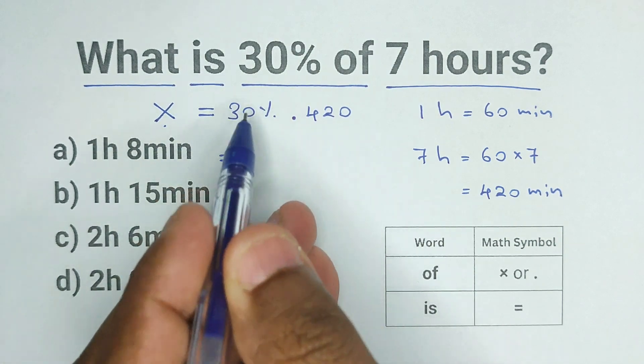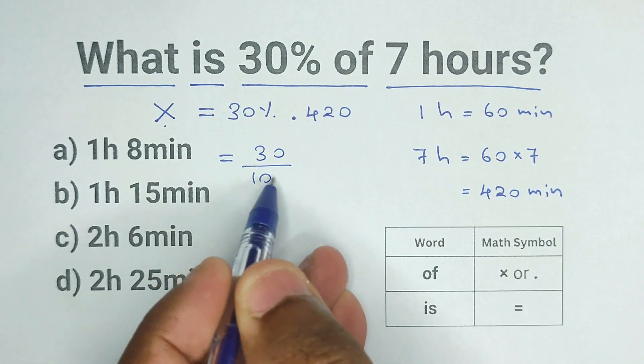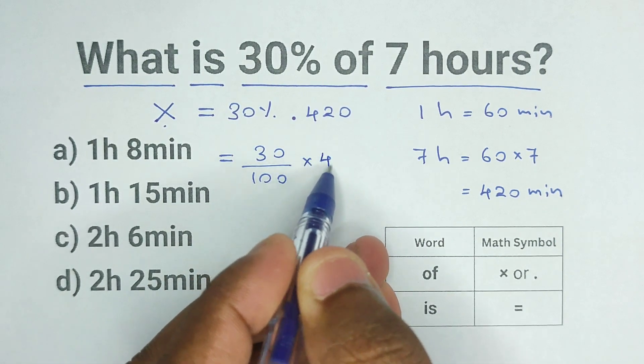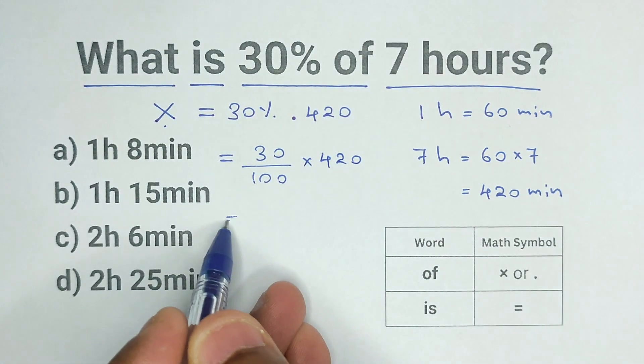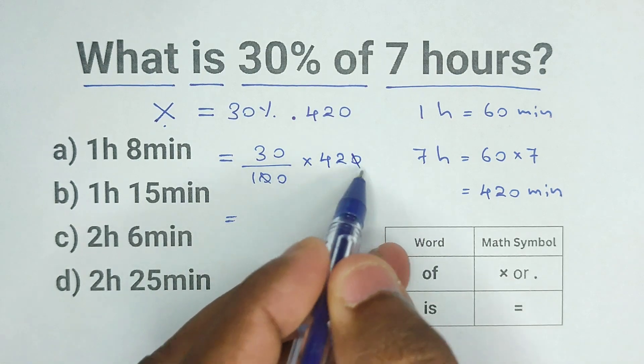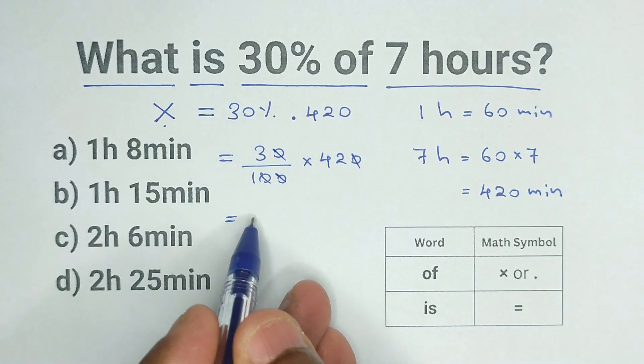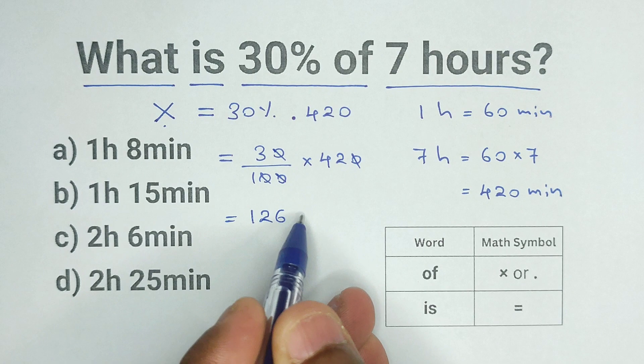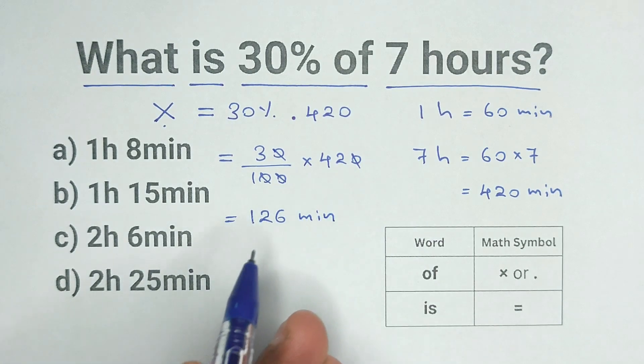We know 30% can be written as 30 over 100 times 420. If you notice, these two zeros cancel out. So 3 times 42 is 126, and we already know this is in minutes.